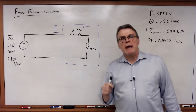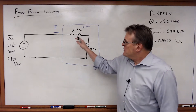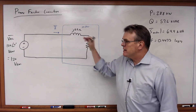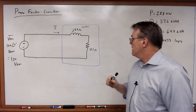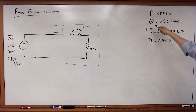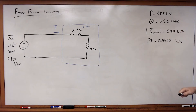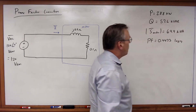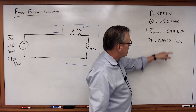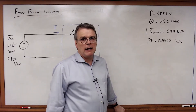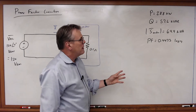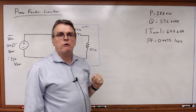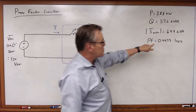Last time we looked at an example where we had a motor and this complex load had a real and an imaginary portion, where we had a real power of 28.8 kilowatts, a reactive power of 57.6 kilovars, with an apparent power of 64.4 kVA and a power factor of 0.4473 lagging. The power company is going to charge you for having a power factor that's too low.